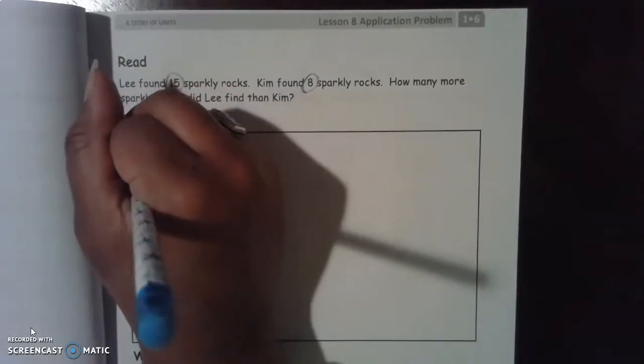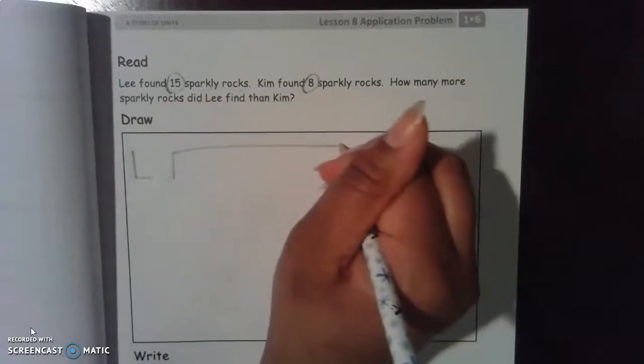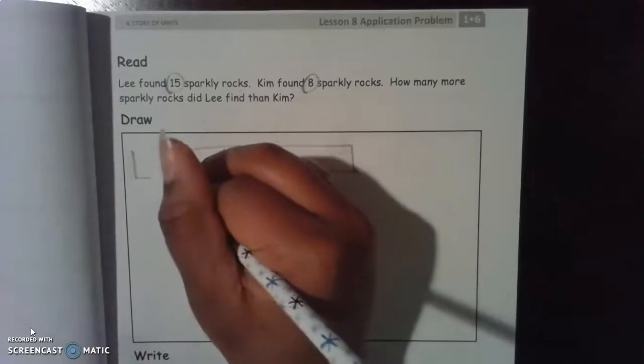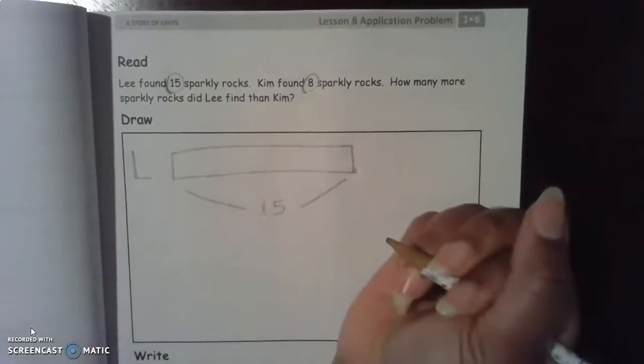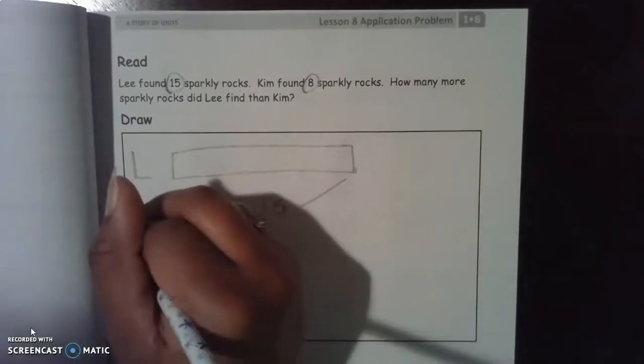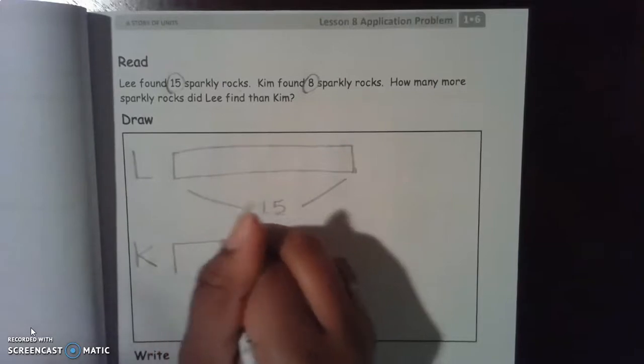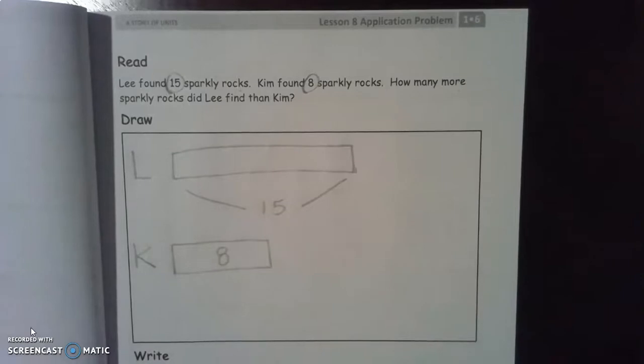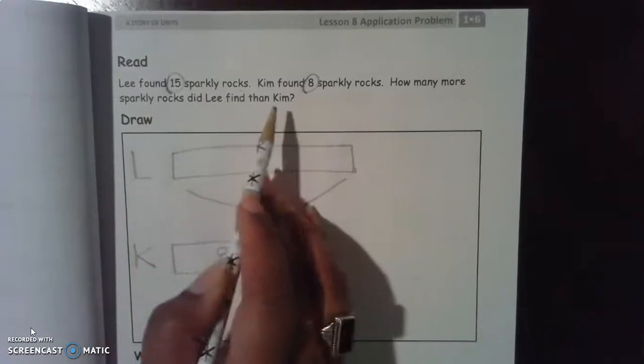So let's make a tape diagram for Lee. We know that Lee has a total of 15 rocks. But we also know that Kim found 8 rocks.